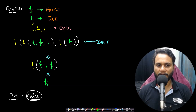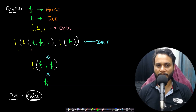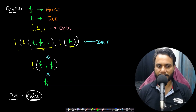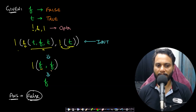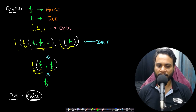Let's say we have 'f' for false, 't' for true, and three operators: logical NOT, logical AND, and OR. Given a sample input expression, we need to do expression evaluation. The innermost expression — true, false, true — will be evaluated first using the AND operator, giving false. The 't' will be evaluated by the NOT operator, giving false. Then false OR false becomes false. Therefore the answer is false.